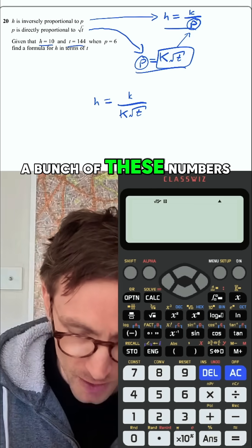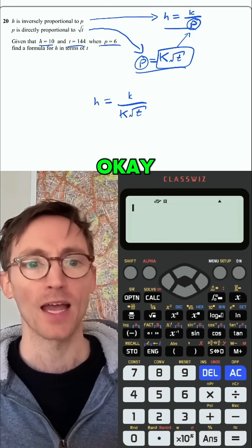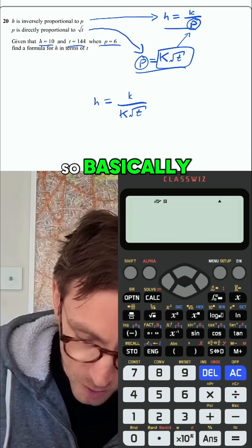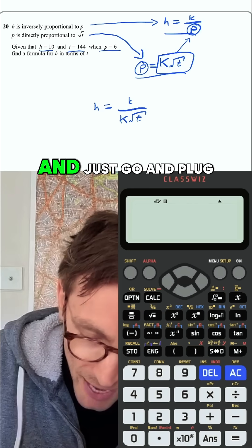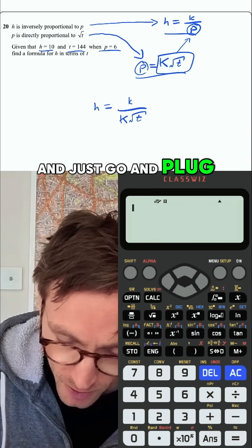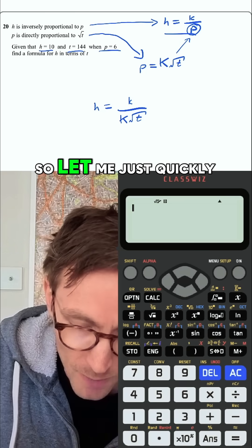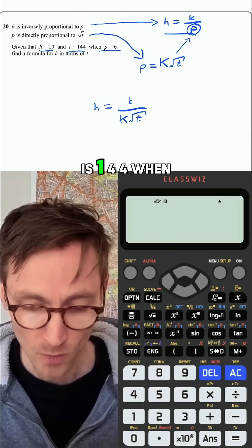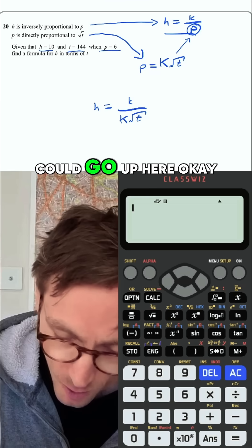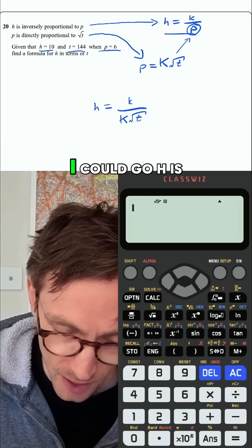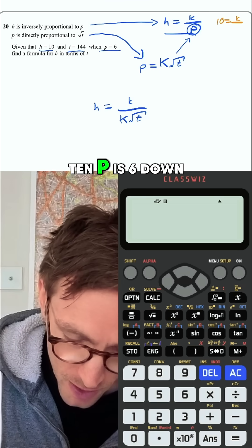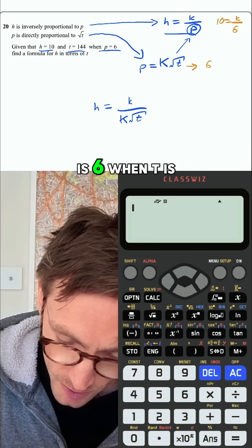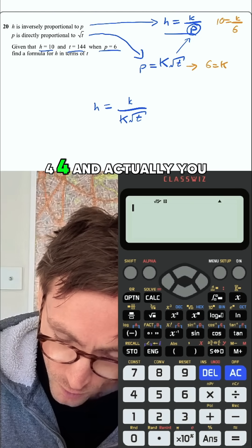Then they're going to give you a bunch of numbers, and you can just start plugging those in. We've got three equations — just go and plug stuff into as many of them as you can. So let me do this in another colour. h is 10 and t is 144 when p is 6. So up here, h is 10 when p is 6, and down here, p is 6 when t is 144.